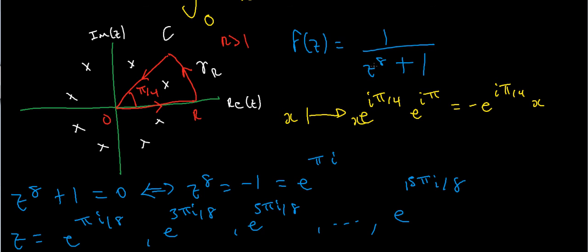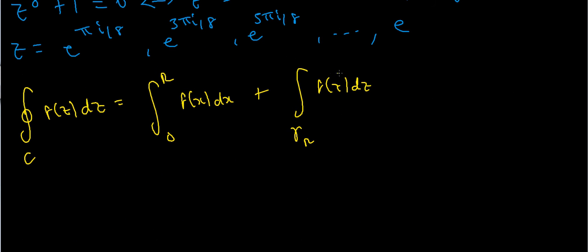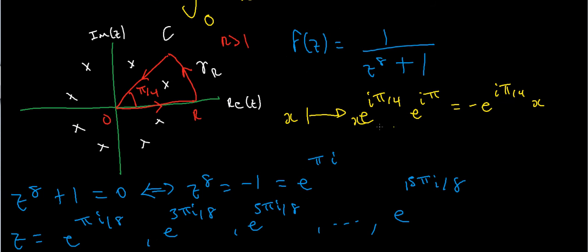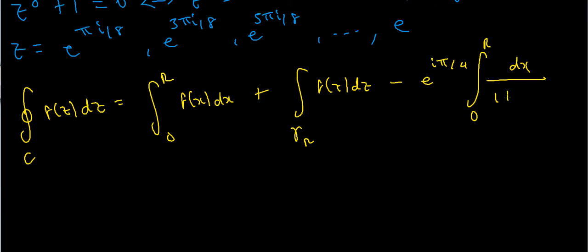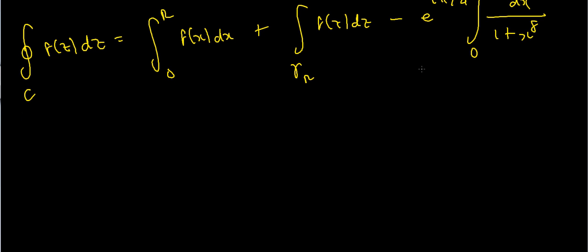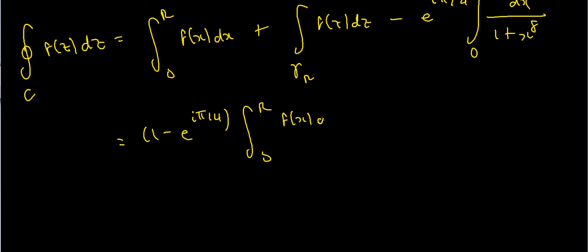When I make this substitution in the last line integral, instead of getting 1 over 1 plus x to the 8, I get minus e to the iπ over 4 times the integral from 0 to R of dx over 1 plus x to the 8. I can then collect the first and third integrals together, giving 1 minus e to the iπ over 4, times the integral from 0 to R of f(x) dx, plus the arc integral over gamma sub R.